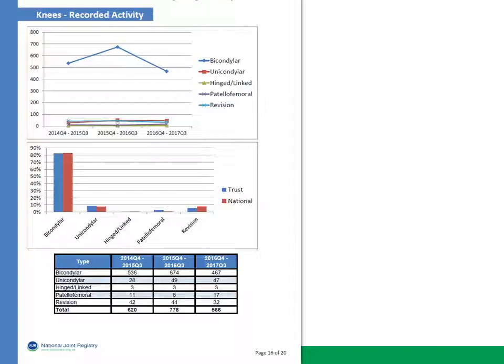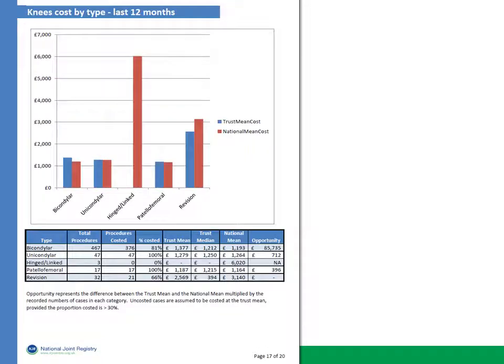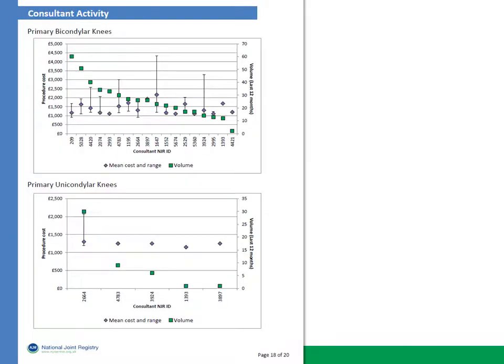The knee section of the report is presented in a very similar format, and again provides an assessment of saving opportunity when comparing the trust to the national average. It also provides an anonymised surgeon level view, as was shown for hips.